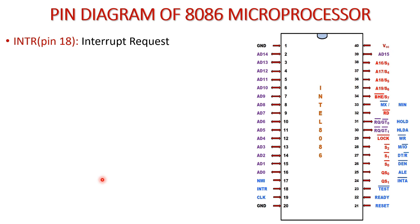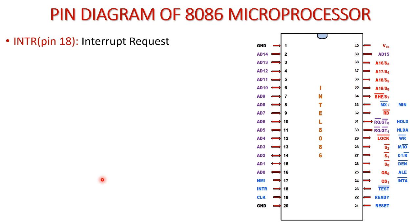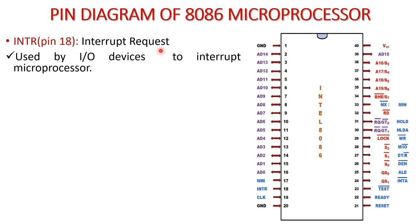The next is the INTR pin — the interrupt pin — available at pin number 18, and it is an input signal. INTR is received by the 8086 microprocessor from the outer environment. It is an interrupt request and is active high. It is used by peripheral devices to gain access to the resources of the microprocessor, which may be address lines, the math processor, or data lines.